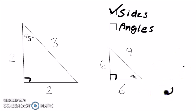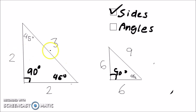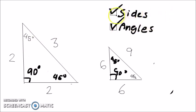We've concluded that all the sides are proportional, so all we have to do left is find out if all the angles are congruent. We know this right here is 45, and this right here is 90 degrees. So 90 plus 45 is 135, and 180 minus 135 is 45. So this angle over here has to be 45. These two triangles are similar because all of their corresponding sides are proportional and all of their corresponding angles are congruent.